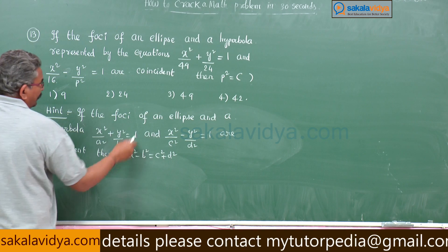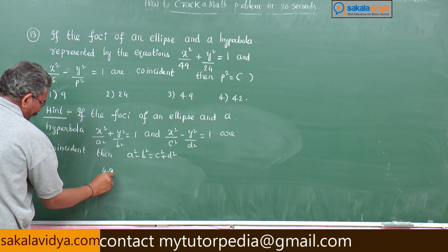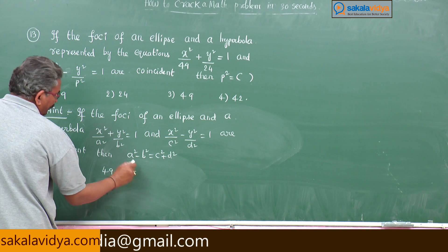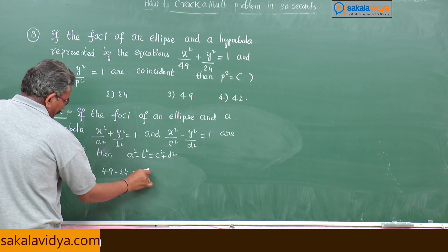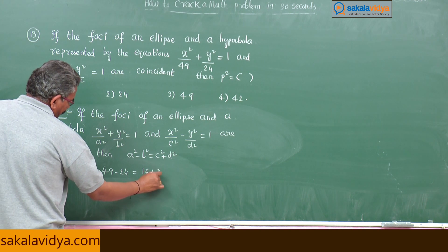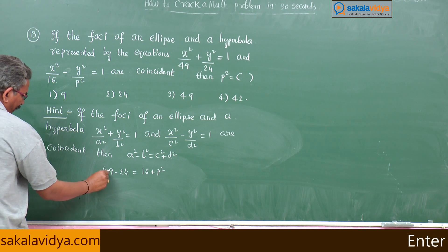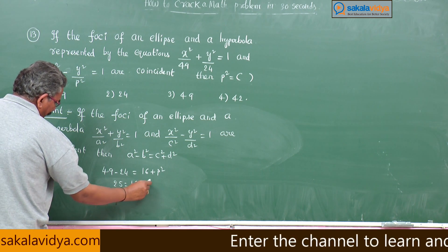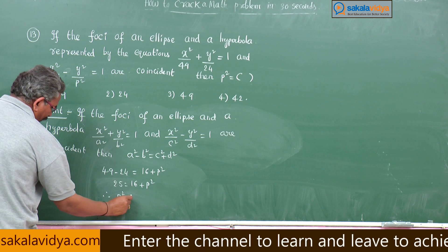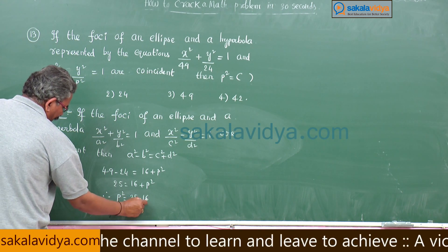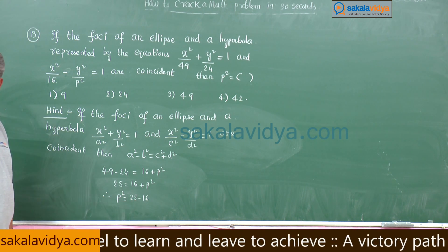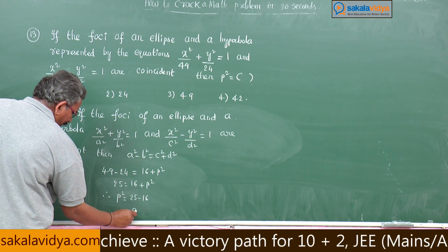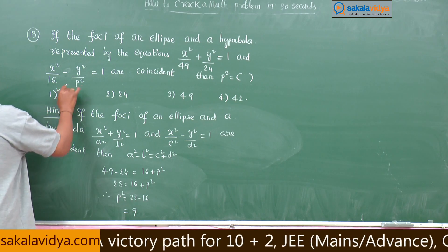Here, a² = 49, b² = 24, c² = 16, and d² = p². So, 49 - 24 = 16 + p². Therefore, p² = 25 - 16 = 9. So, the first option is the right option.